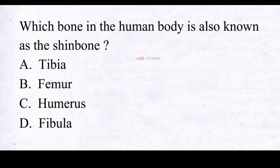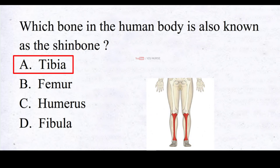Which bone in the human body is also known as the shin bone? A. Tibia, B. Femur, C. Humerus, D. Fibula. And the correct answer is A. Tibia. Tibia is also called the shin bone.